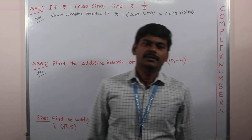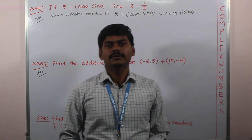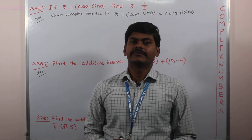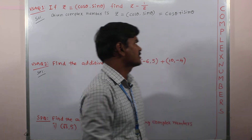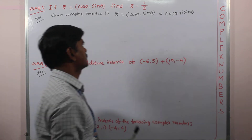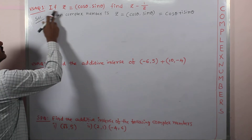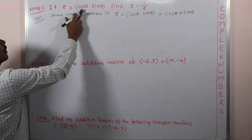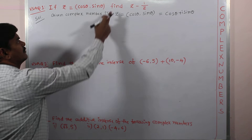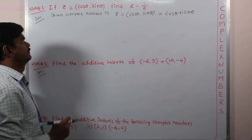Hello students. In this video we are going to learn some important varied short answer questions from the chapter complex numbers. Let us see the first question. If z equals cos theta comma sin theta, find z minus 1 by z.